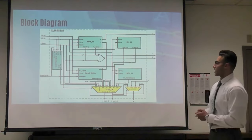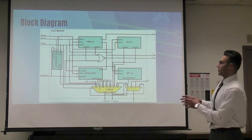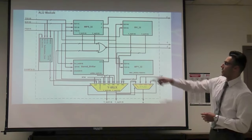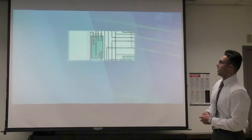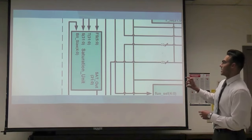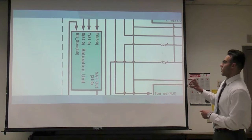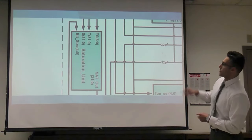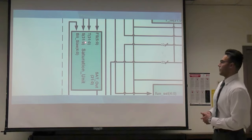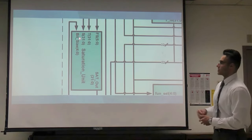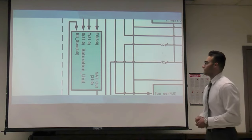Here is the block diagram of our ALU module. As you can see, we've embedded the saturation unit inside the ALU. It is taking two 32-bit inputs and five bits for the bit size. We'll talk about the bit size later on.